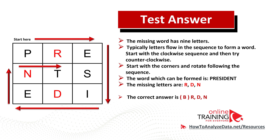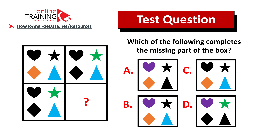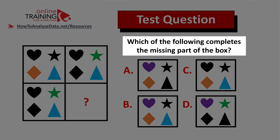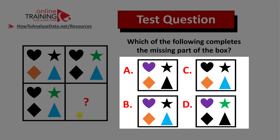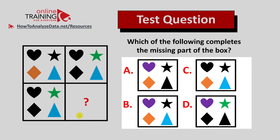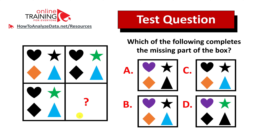Here is a question you can try to solve on your own. Please post your answer in the comment section and I'll give you feedback. Which of the following completes the missing part of the box? You're presented with a two by two box where each section contains different figures of different colors, and one box in the bottom right corner has a question mark. You have four choices — always look for patterns. I'll post a detailed answer in future videos, so make sure to subscribe.